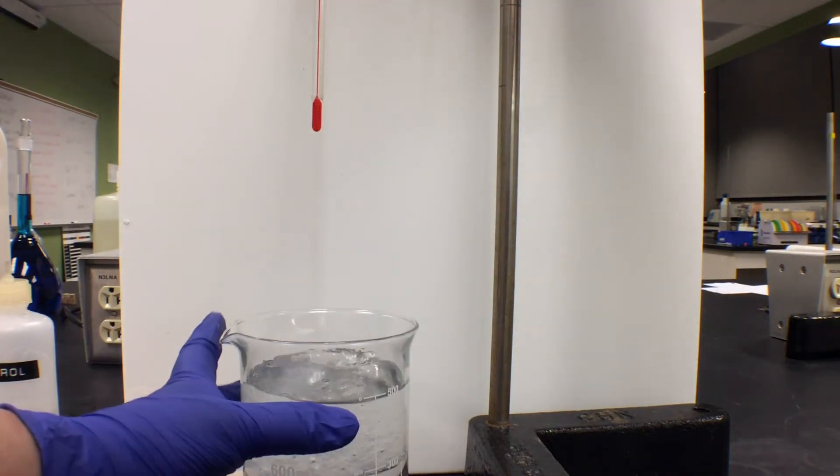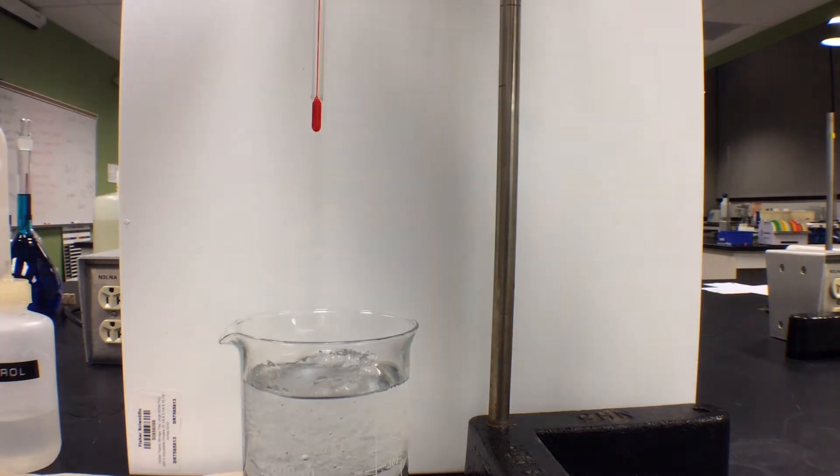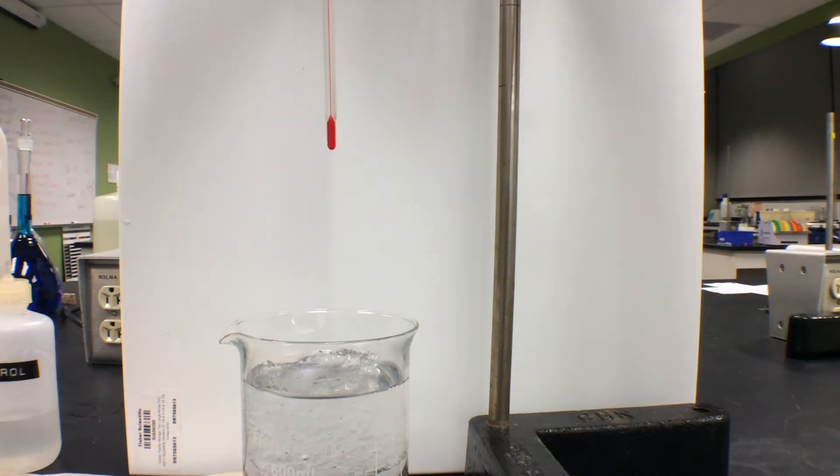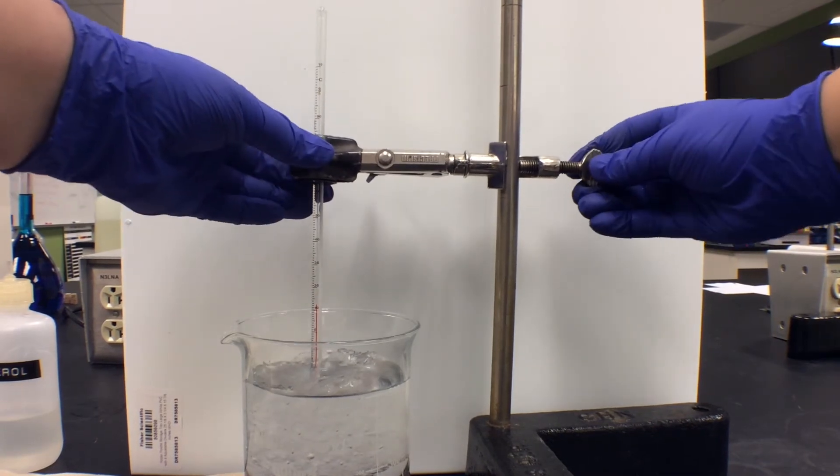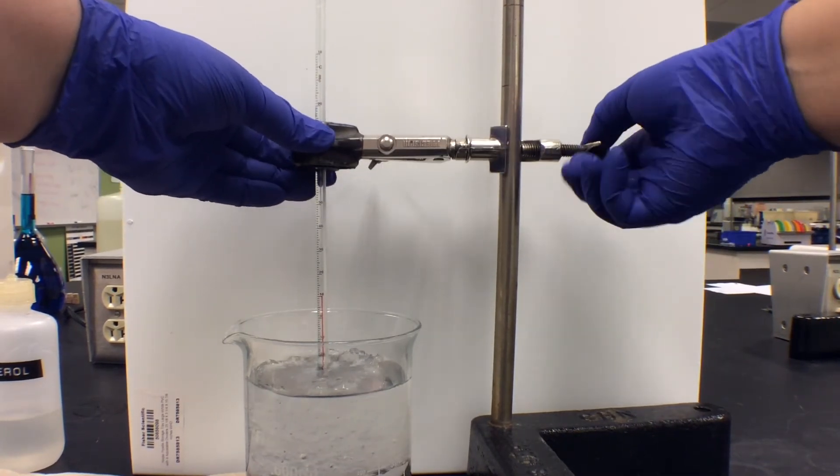Adjust the height of the thermometer and slide the ice bath underneath it. Bring the thermometer back down and make sure the bulb of the thermometer is surrounded by ice and is not touching the sides of the beaker.